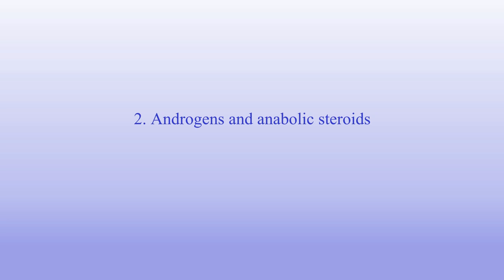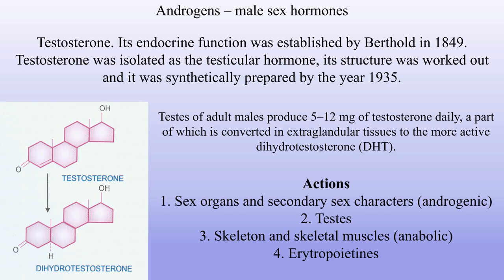The next part of our lecture is androgens and anabolic steroids. Androgens are male sex hormones. Testosterone — its endocrine function was established by Berthold in 1849. Testosterone was isolated as the testicular hormone, its structure was worked out and it was synthetically prepared by 1935. Testes of adult male produce 5 to 12 mg of testosterone daily, a part of which is converted in extra-glandular tissues to the more active dihydrotestosterone (DHT). Actions of testosterone: first, sex organs and secondary sex characters (androgenic); second, testes; third, skeleton and skeletal muscles (anabolic); and fourth, erythropoiesis.